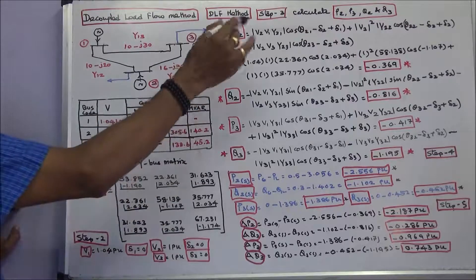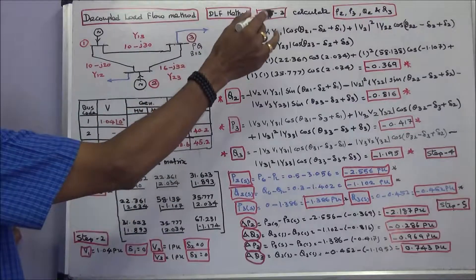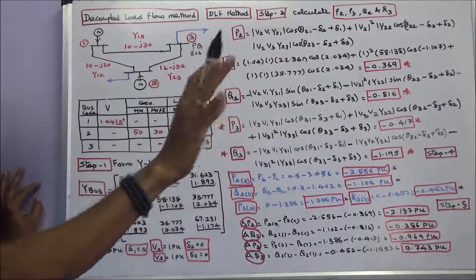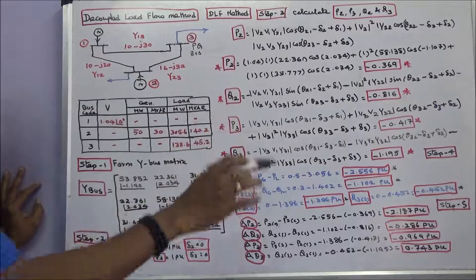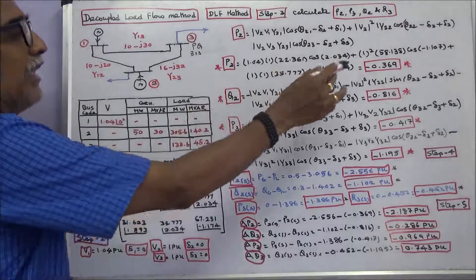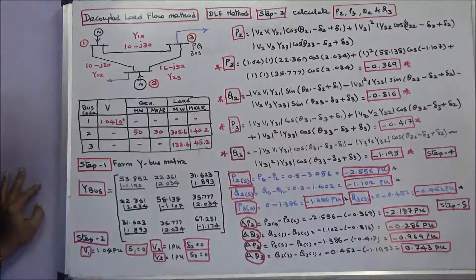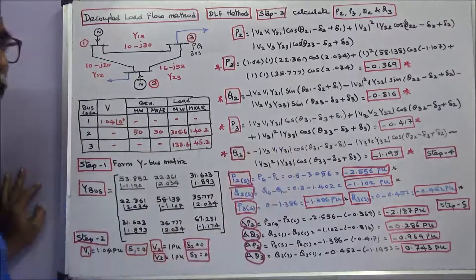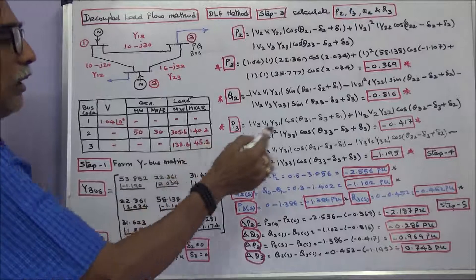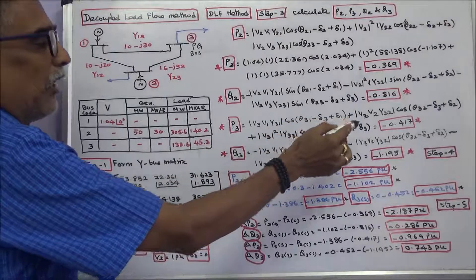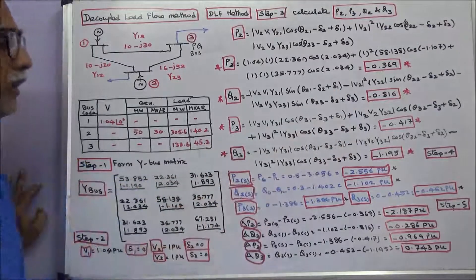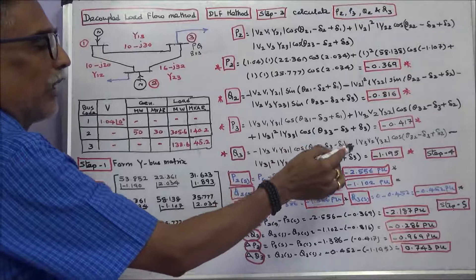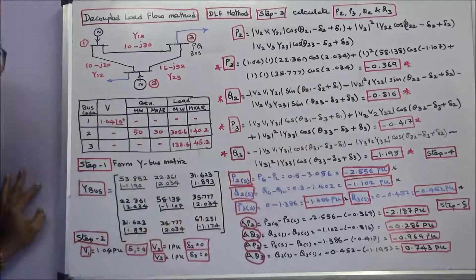Step 3: Calculate P2, P3, Q2, Q3 using the static load flow equations. P2 = -0.369 per unit, Q2 = -0.816 per unit, P3 = -0.417 per unit, Q3 = -1.195 per unit — all are in per unit.